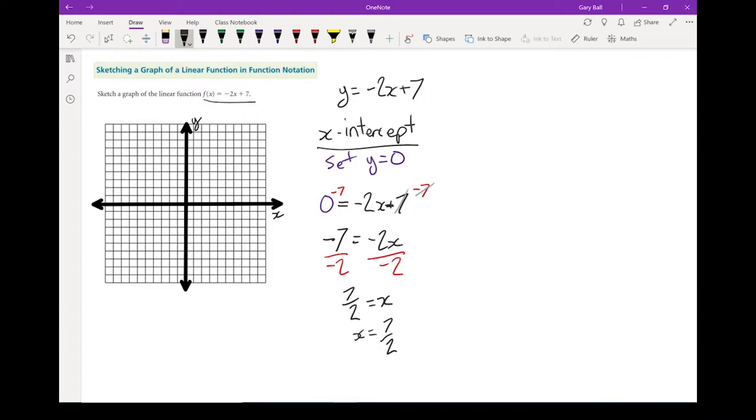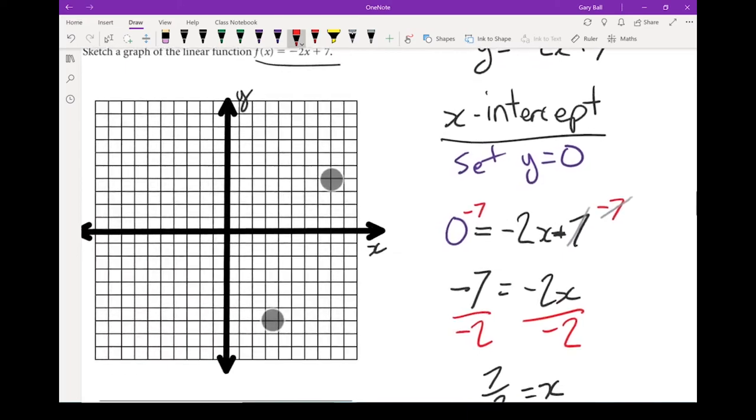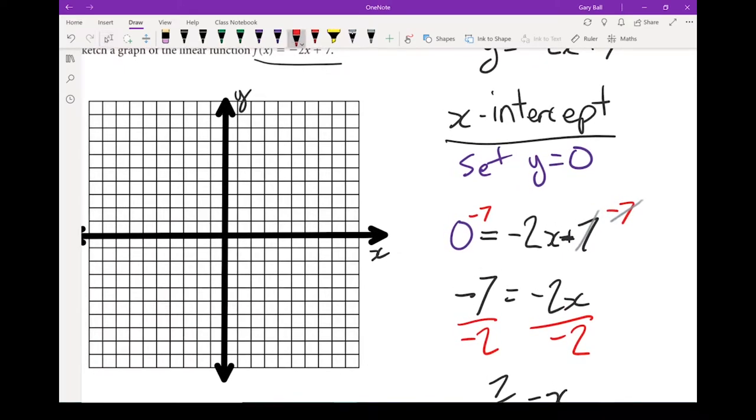So how do we graph 7 halves? You can just divide it. 7 divided by 2 should give me 3.5. So that x-intercept is going to cross my x-axis at 3.5. So it's going to cross right about there.